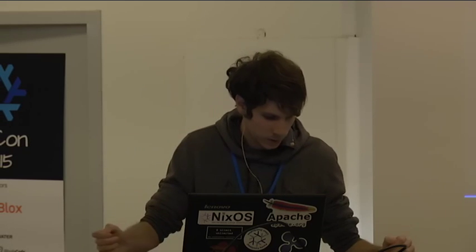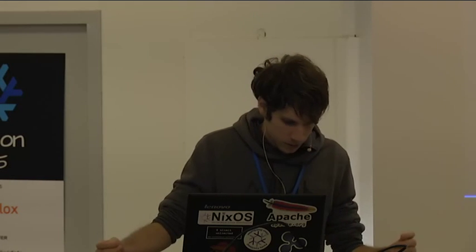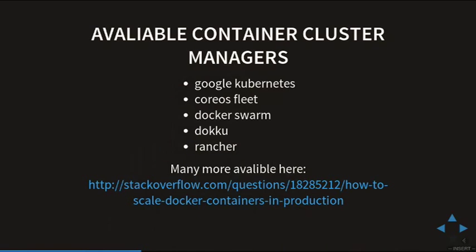There's also Dokku — it's like an open-source Heroku written in Bash, and it's really nice if you want to deploy a simple application. And then the last is Rancher, which is a solution on its own, also using Docker and providing its own overlay networking with a pretty nice UI. I asked the guys from Rancher if they could provide instructions for deploying it separately on machines, but they don't have that planned right now.